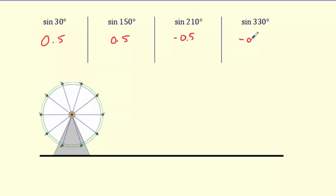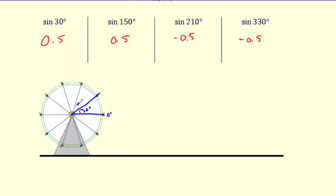Why do 30, 150, 210, and 330 all have the same ratio? Let's check it out with the ferris wheel — everything goes back to this ferris wheel. Remember, zero degrees is over here. This first angle looks like a 30-degree angle.